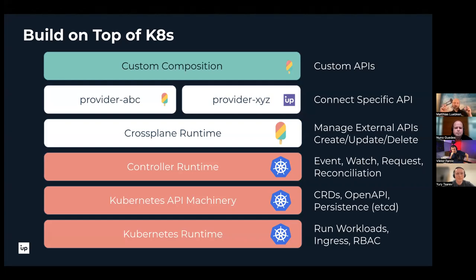There are different types of providers — some from the community, some that we at Upbound open source and provide to the community. You build your custom APIs on top of them. For an internal cloud platform, you can define something like your own ACME database with a special interface — those are the custom APIs you define in a custom composition.